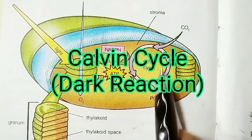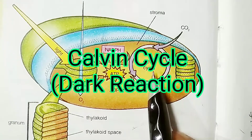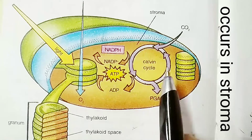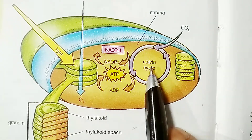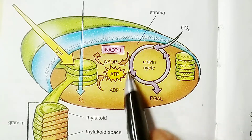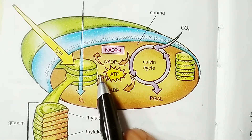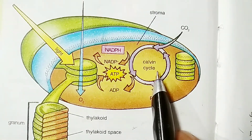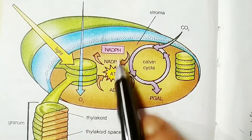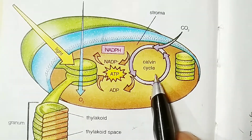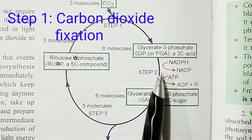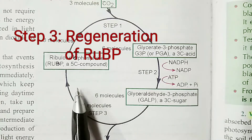The second phase of photosynthesis is called the Calvin cycle or dark reaction. This is the biosynthetic phase of photosynthesis. The dark reaction occurs in the stroma of the chloroplasts. This reaction does not require light energy, but that does not mean it occurs only in the dark — it is a light-independent reaction. The dark reaction occurs simultaneously with the light reaction, and the time gap between them is less than a second. In the dark reaction, NADPH and ATP formed during light reaction are utilized to convert carbon dioxide to sugar. There are three steps: first is carbon dioxide fixation, second is carbon dioxide reduction, and third is regeneration of RuBP.